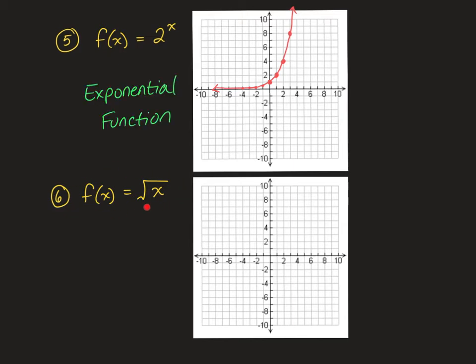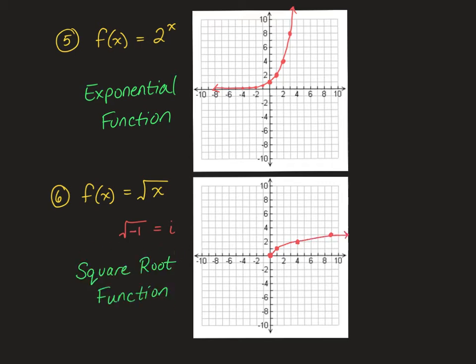Our last function is f of x equals the square root of x. The square root of 0 is 0, the square root of 1 is 1, the square root of 4 is 2, and the square root of 9 is 3. You cannot do the square root of a negative number — the square root of negative 1 is actually the letter i, which stands for imaginary. So this function only goes in one direction. This is called a square root function.